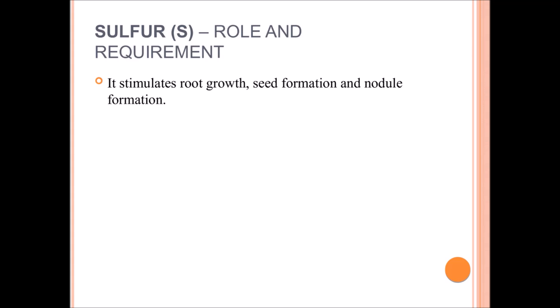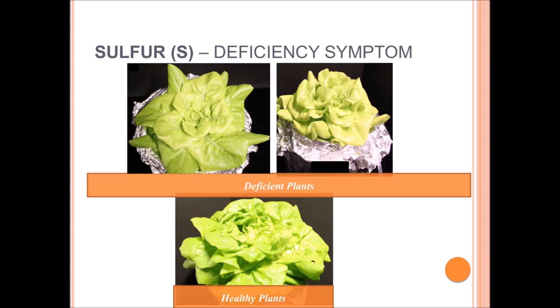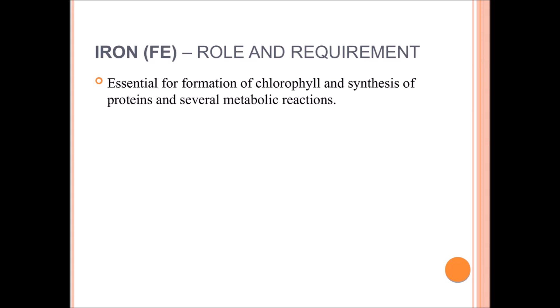Sulfur is an essential plant nutrient that shows deficiency symptoms on new leaves. It helps in stimulating root growth, formation of nodules, and vegetative growth. In lettuce, sulfur deficiency appears on new leaves — not at the apical buds like calcium, but on new leaves. Sulfur also produces chlorosis, but this chlorosis is a little bit different from nitrogen deficiency chlorosis.